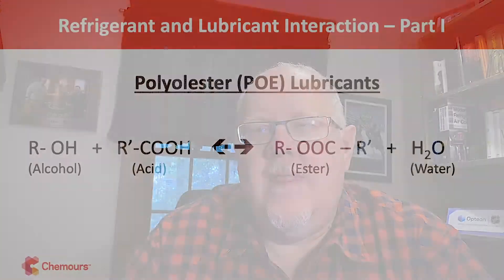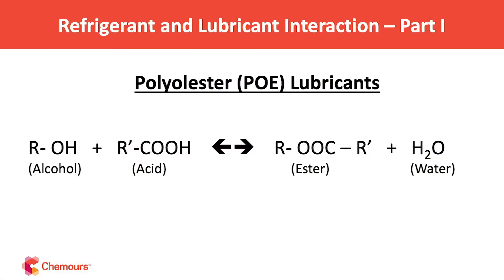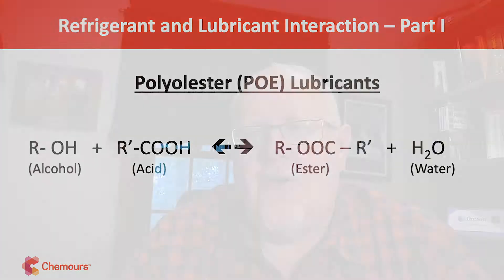The word ester is an organic chemistry term. An ester is really the result of a condensation reaction — a combination of an organic alcohol with an OH group and an organic acid with a carboxylic acid group. Those split out a molecule of water and combine together to form the ester molecule. The R groups represent any hydrocarbon organic backbone structure, and by varying those R groups you can fine-tune the properties of the lubricant you end up with.